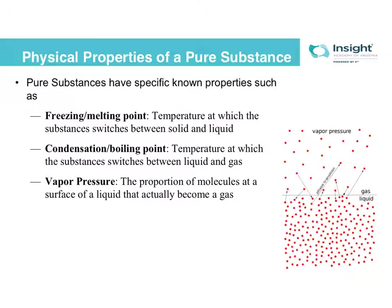Condensation or boiling point — also sometimes called evaporation point — is the temperature at which the transition between gas and liquid occurs. Vapor pressure is something you may not have heard of before, and it ties in closely with boiling point. When you have a liquid, at the surface of the liquid there's always a certain amount of molecules that will spontaneously go into the gas phase. This property is dependent on the substance.